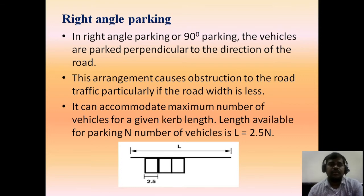Next comes right angle parking, also called 90-degree parking. The vehicles are parked perpendicular to the direction of the road. This arrangement causes obstruction to road traffic, particularly if the road width is less. The formula is L = 2.5N. When we observe the sequence, the first type was parallel parking at 0 degrees, then 30 degrees, 45, 60, and finally right angle parking. As the angle increases, the number of vehicles that can be parked in a fixed length increases.